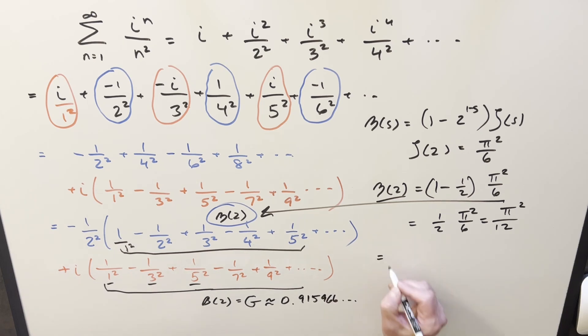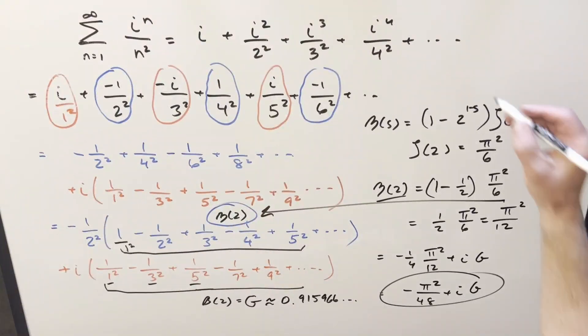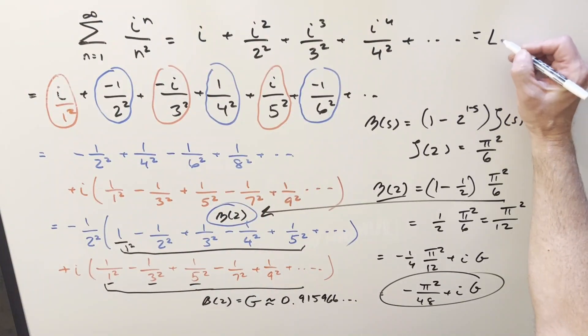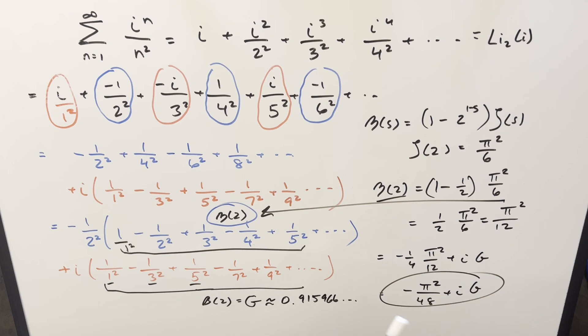So we can put all these pieces together now. Here this is going to be minus 1 fourth times our eta 2 pi squared over 12 plus i times Catalan's constant. Multiply this together. For my final solution on this, we just get minus pi squared over 48 plus i G, and that's it. One note on this, you may notice this is actually the same thing as the di-logarithm of i. I was trying to find a way maybe to use that, but it just seemed like it was going to be more difficult if I turn this into an integral or something. So there you have it. Thanks everyone for watching. Have a good day.